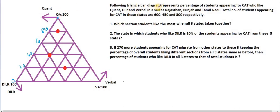Now let's read the question first. The following triangle bar diagram represents percentage of students appearing for CAT who like quant, DILR, and verbal in three states: Punjab, Rajasthan, and Tamil Nadu. So this is percentage of students — at this point, 100% of the students like quant, along this complete line. In this complete line 80% like quant, in this 60%, here 40%, here 20%, and here 0%.